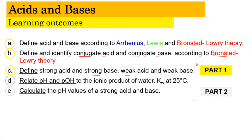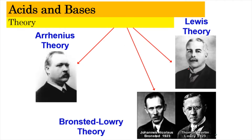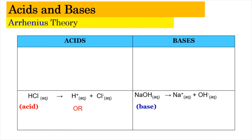So without any further ado, let's start with Part 1. Acid and Bases — as mentioned, there are 3 theories we're going to learn: Arrhenius, Bronsted-Lowry, and Lewis. For now, let's look into the Arrhenius Theory first.